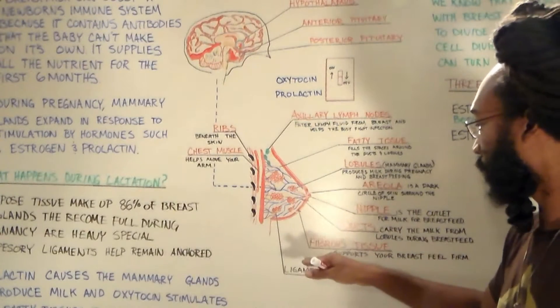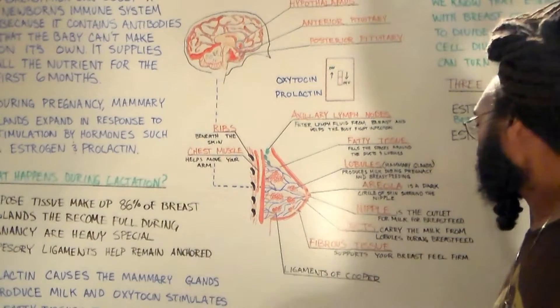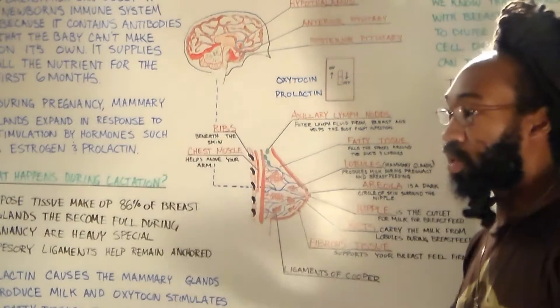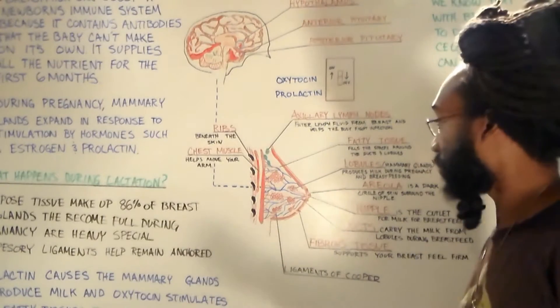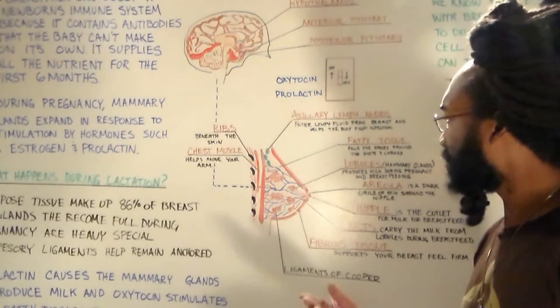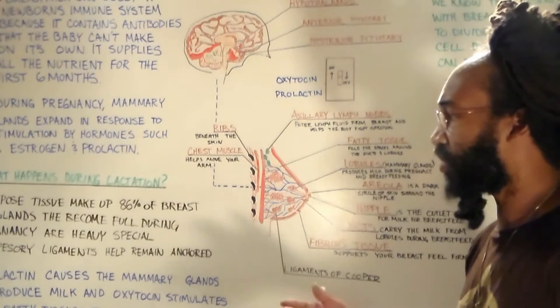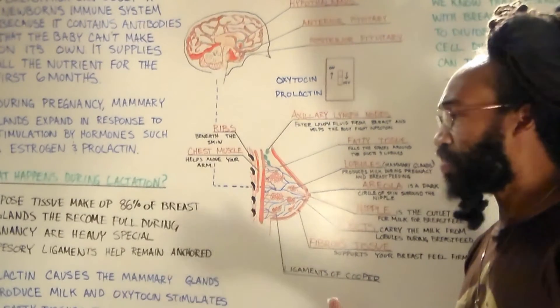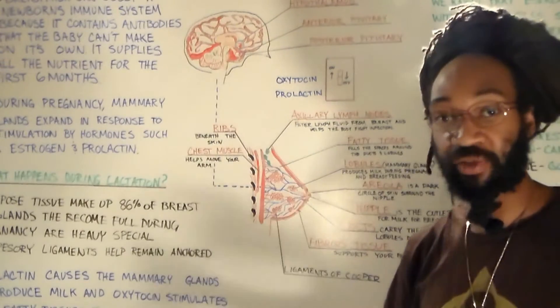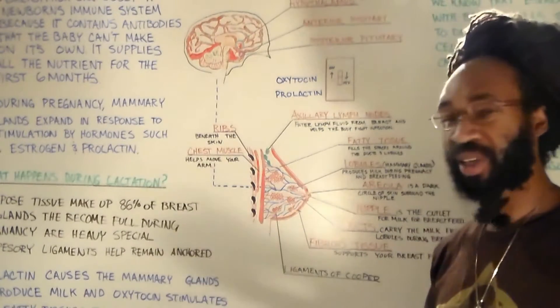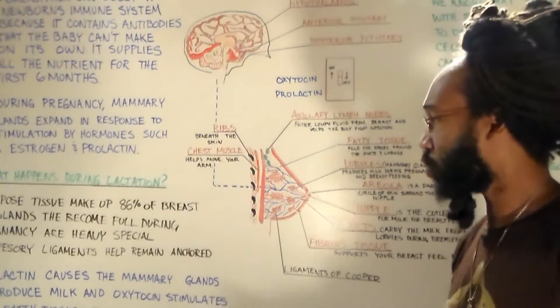So up under this areola we have this fibrous tissue. Now the fibrous tissue is what makes the breast feel firm, it gives it a firm feeling. But then we know that during pregnancy, 86 percent of that breast weight is off because of the glands. The fatty tissues is there and it becomes really really heavy, so we need a support.